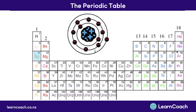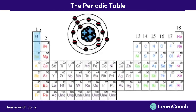This carries on with the third shell as well — one in its outer shell, two in its outer shell, and so on. This means that the vertical columns, called groups, show how many electrons are in the outermost shell.